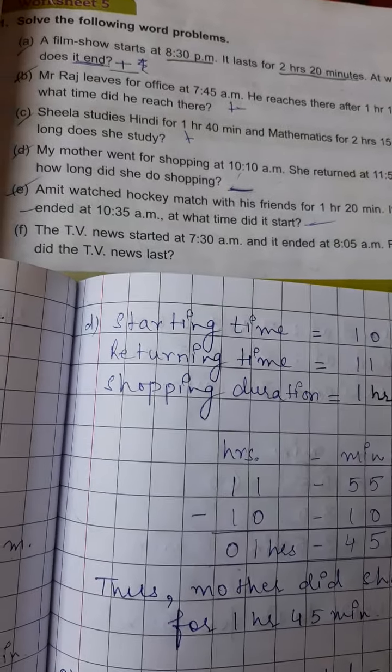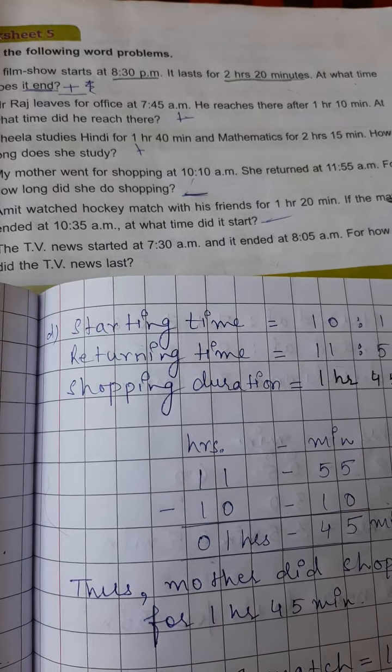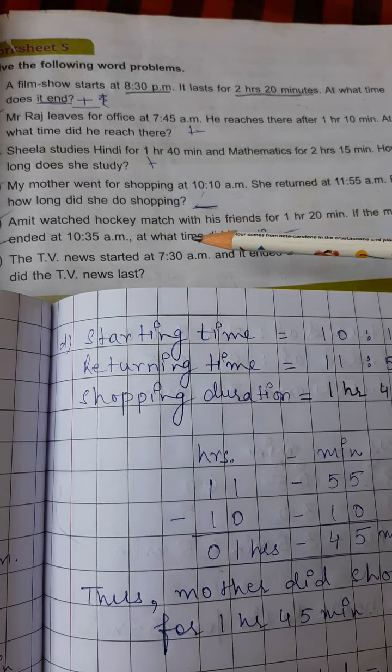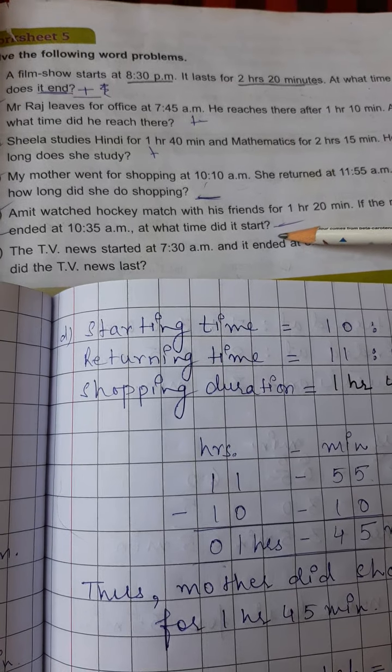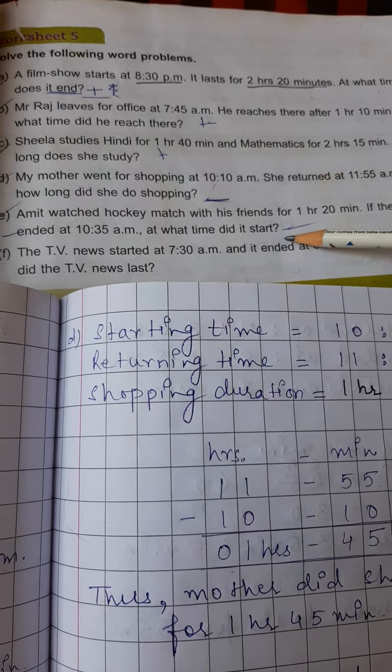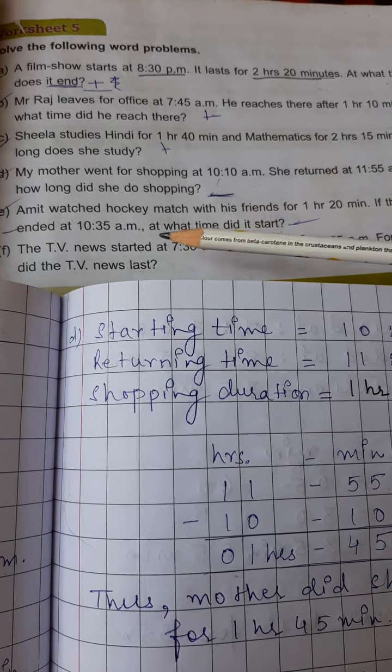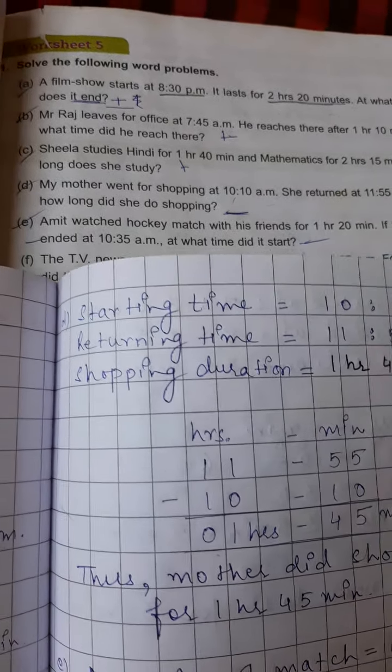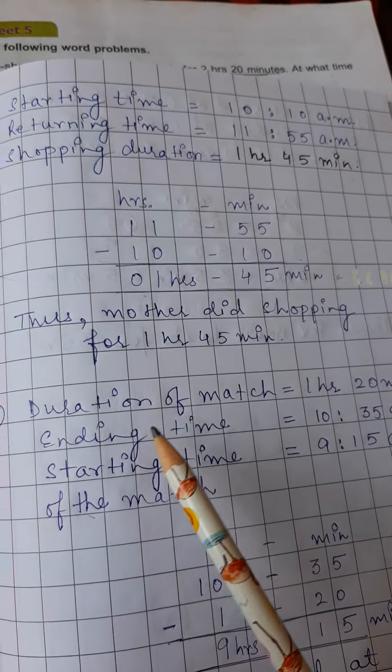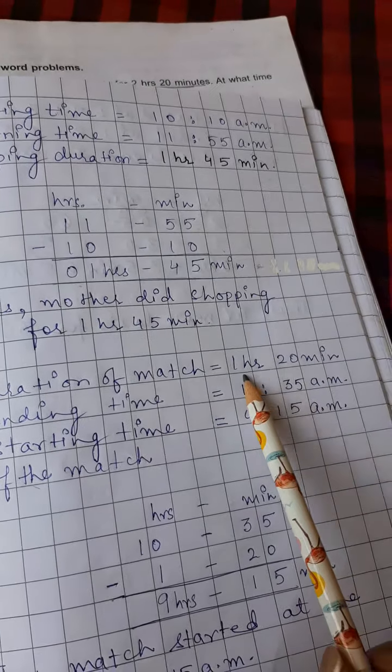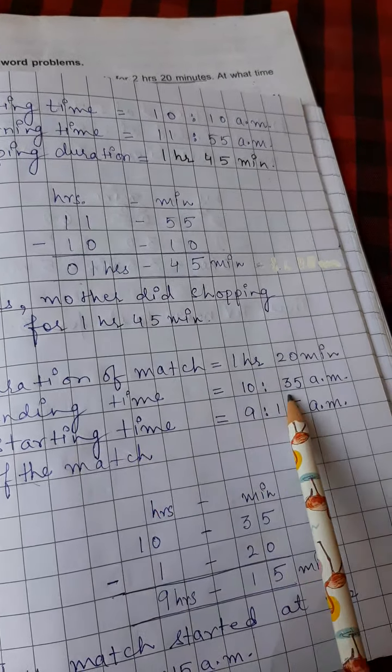Now, E part is, Amit watched hockey match with his friends for 1 hour and 20 minutes. If the match ended at 10.35am, at what time did it start? Now here in this question, we have to find out the starting time. So, the duration is given and the ending time is given. So, how we are going to do this is, write duration of match. That is, 1 hour, 20 minutes. The ending time is 10.35am. That means, 10 hours, 35 minutes.